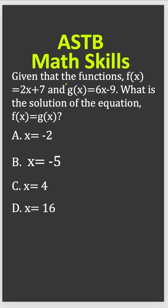The question says: given the function f(x) = 2x + 7 and g(x) = 6x - 9, what is the solution of the equation if f(x) = g(x)?